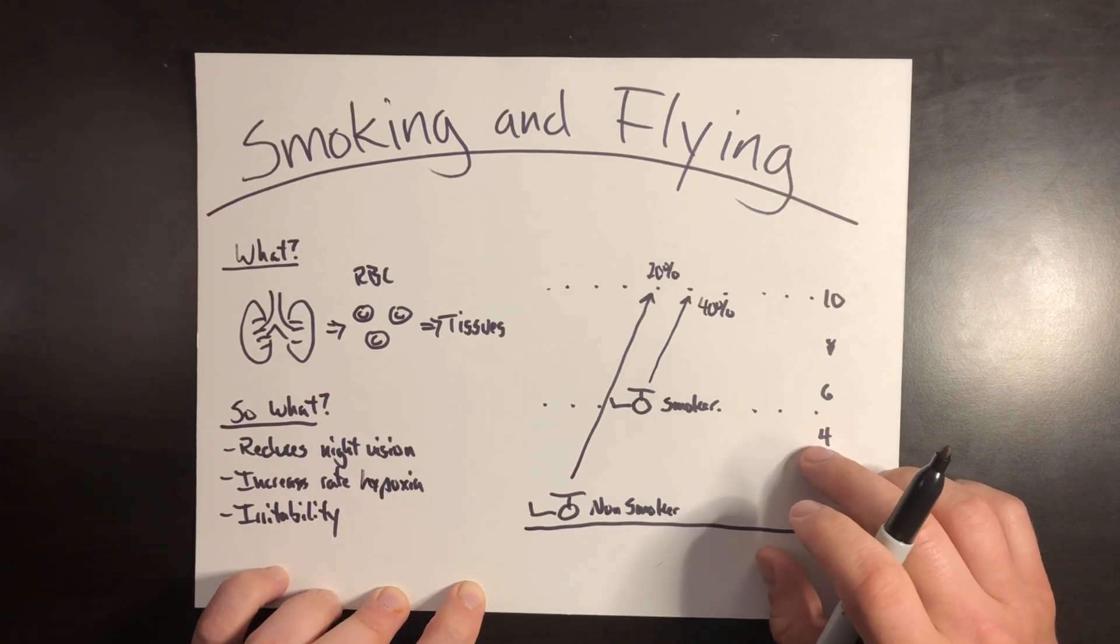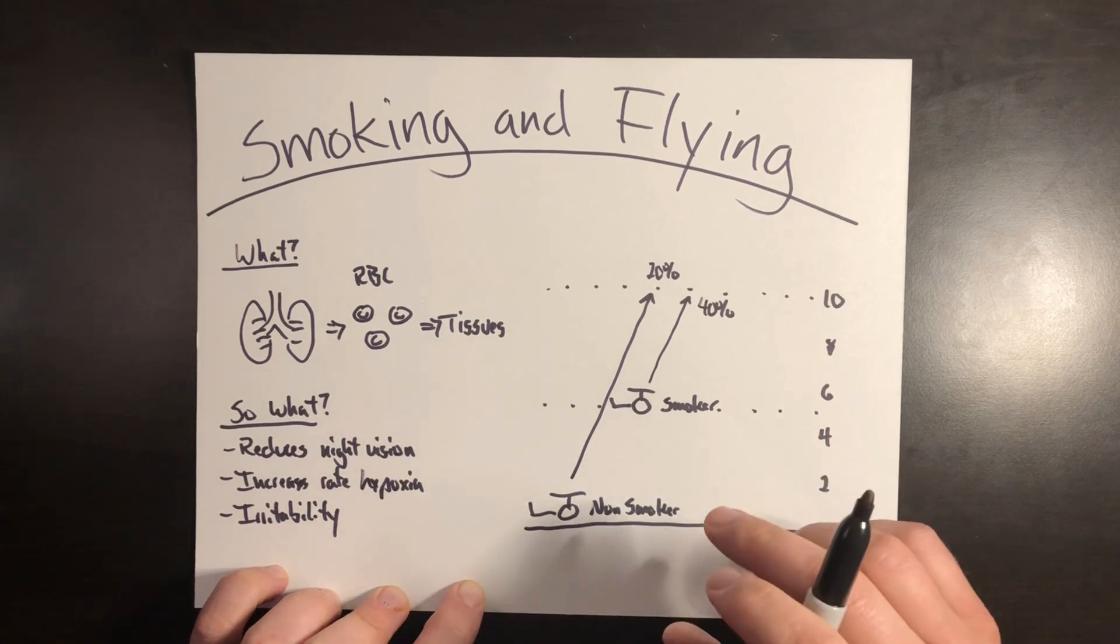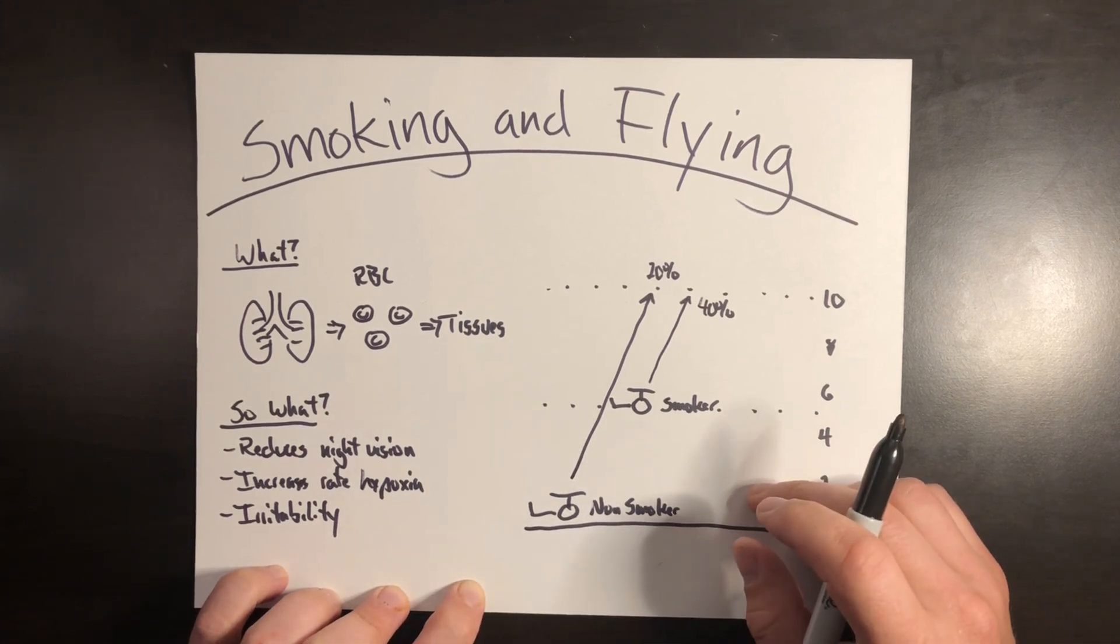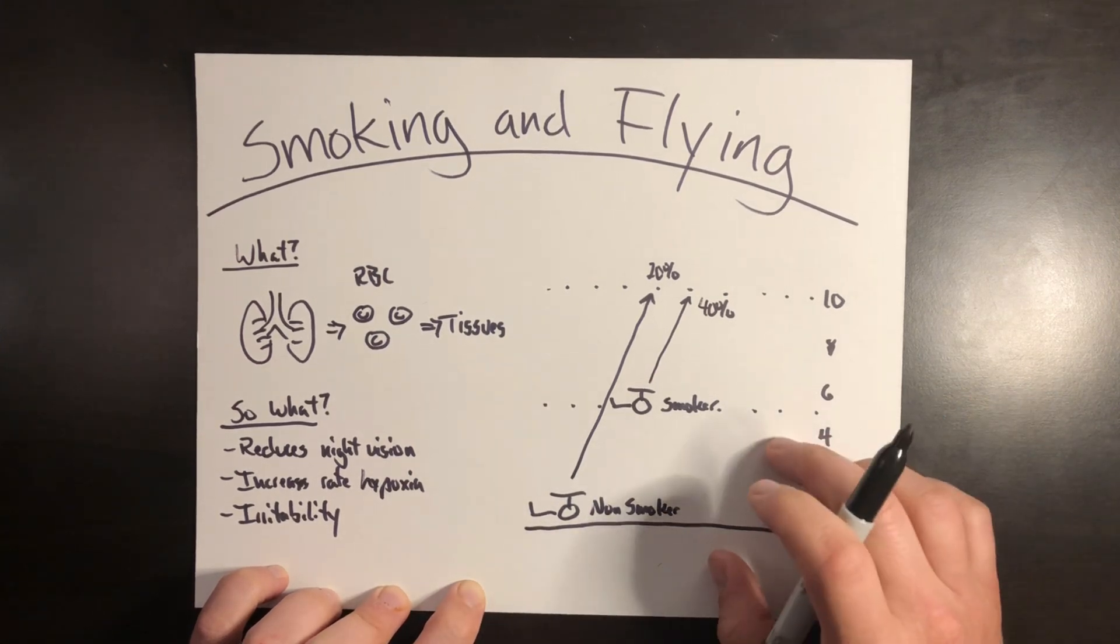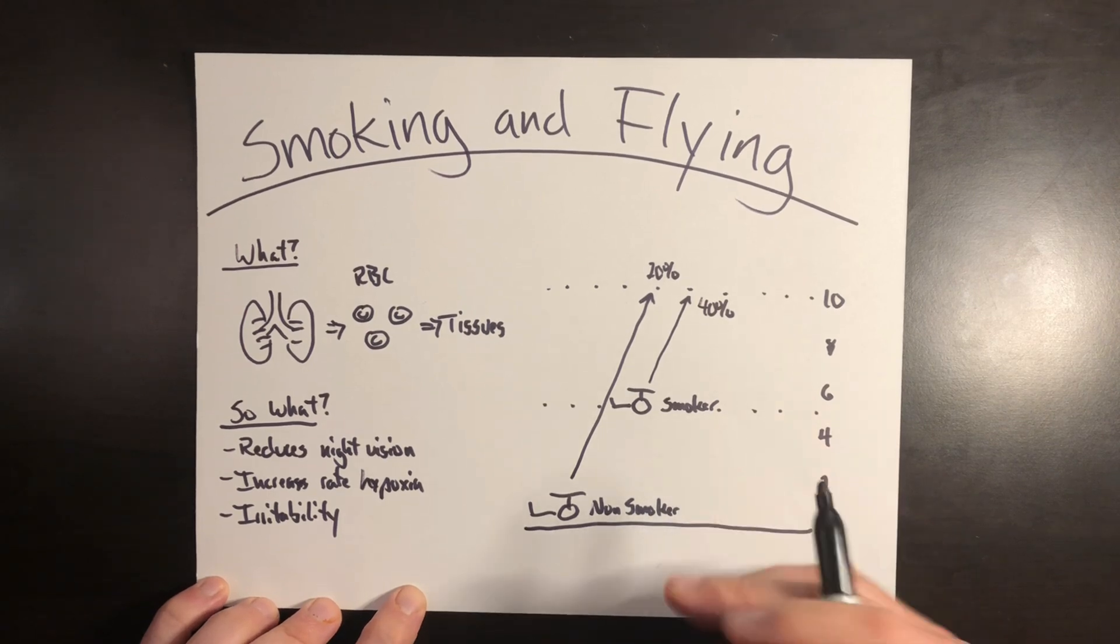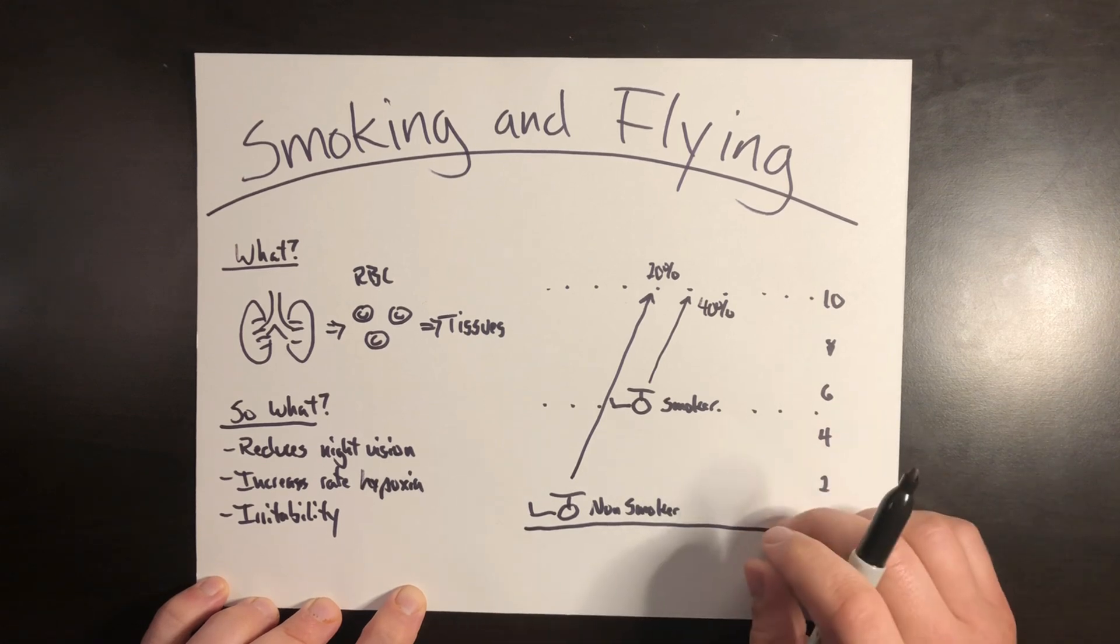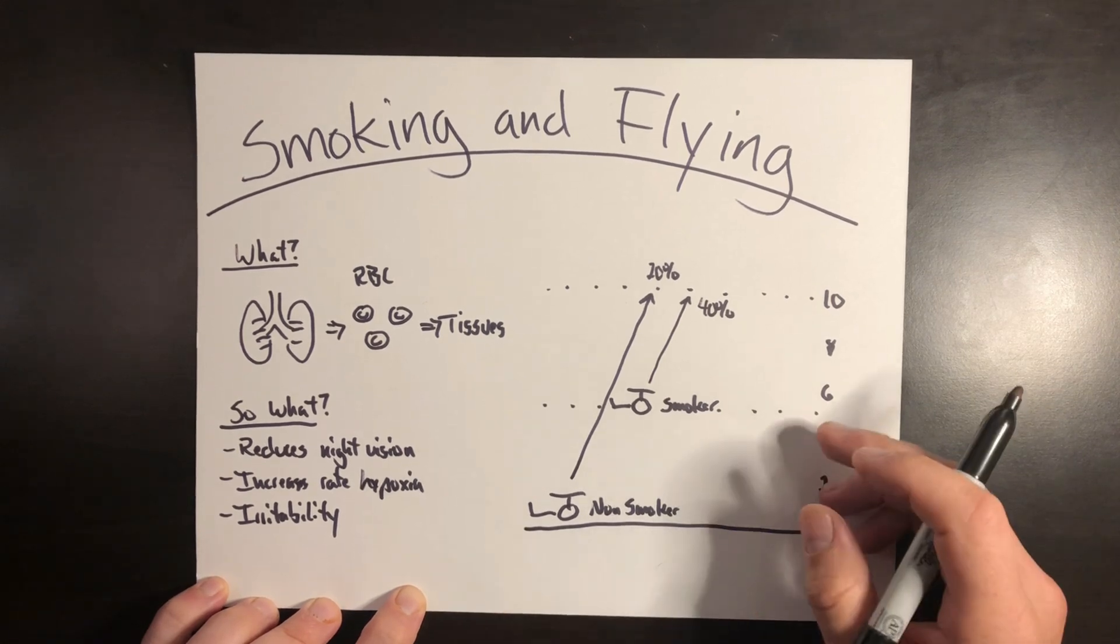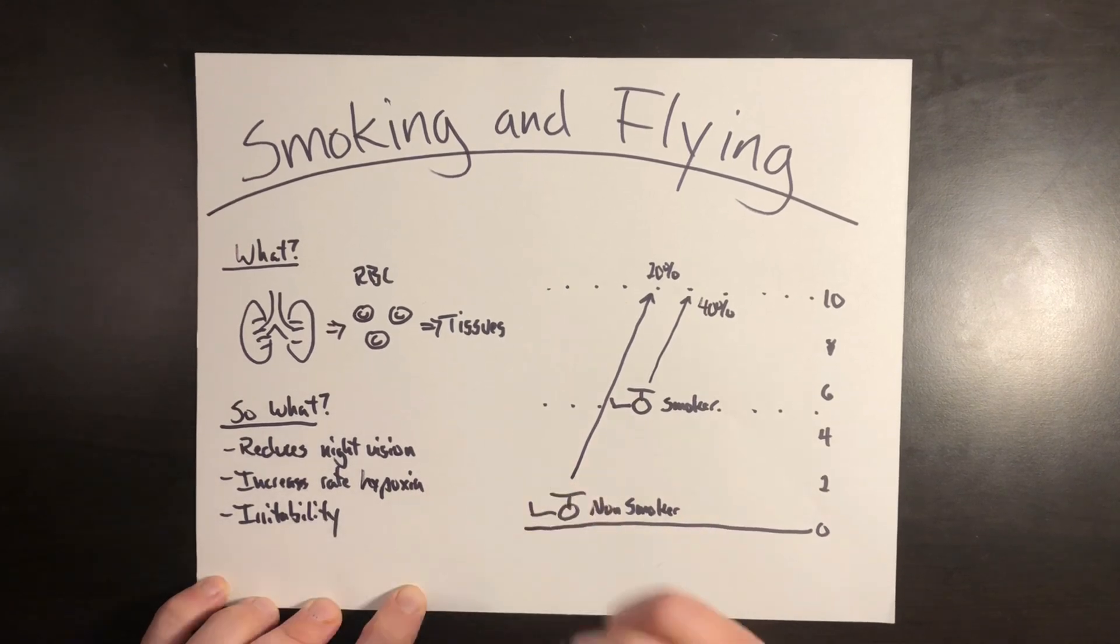Now, this video isn't out there to shame anyone about smoking. It's just meant to shed light on how the choices that you make on the ground and the habits that you have affect how you can perform in the air and really degradation in performance as a helicopter pilot. But that wraps up this topic. Smoking reduces the ability or the amount of oxygen that your body can absorb, which results in reduced night vision, increased susceptibility to hypoxic hypoxia, as well as hypemic hypoxia, which is always going on for a smoker.